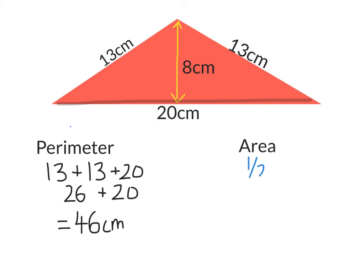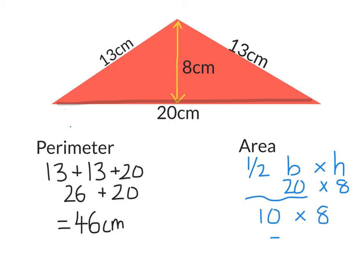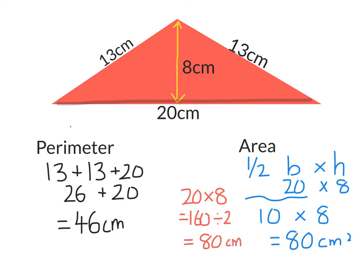Now the area. Remember the formula is half the base times the height, where the base is 20 and the height is 8. Half the base is 10, times the height of 8 gives an area of 80 centimeters squared. Alternatively, 20 times 8 is 160, and then halving it at the end still gives 80 centimeters squared. Halving the base at the beginning means we're working with smaller numbers to multiply.